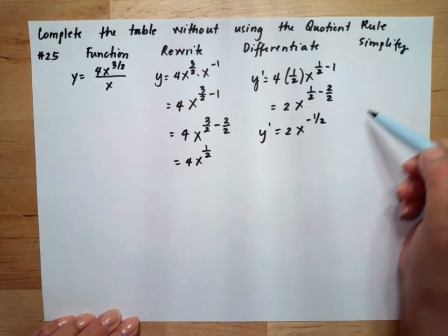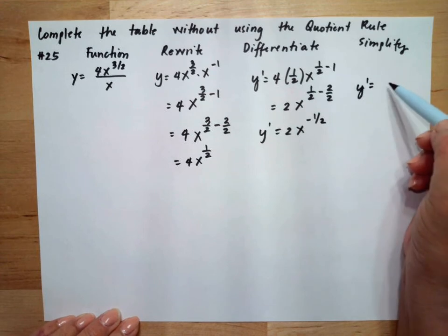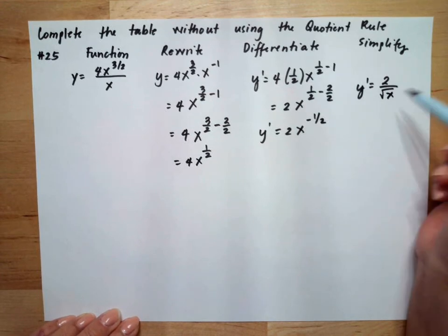To rewrite or simplify this, it will be 2 over the square root of x.